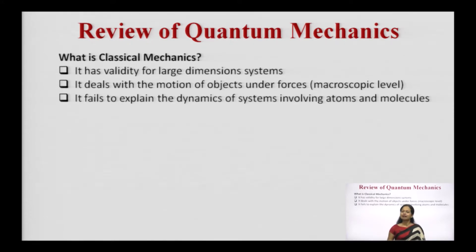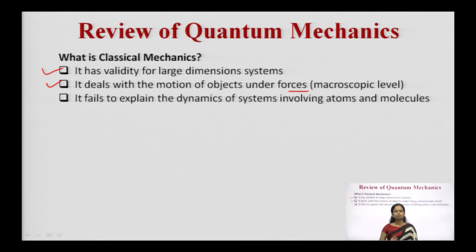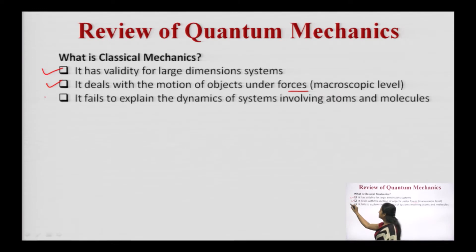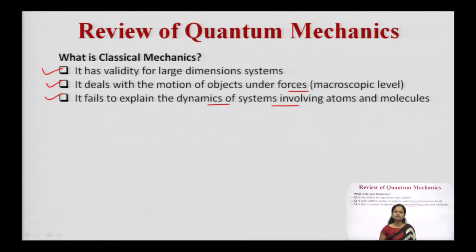For large dimension systems, classical mechanics deals with the motion of objects under forces at the macroscopic level. It fails to explain the dynamics of systems involving atoms and molecules — classical mechanics cannot be applied successfully for understanding the dynamics of those systems.